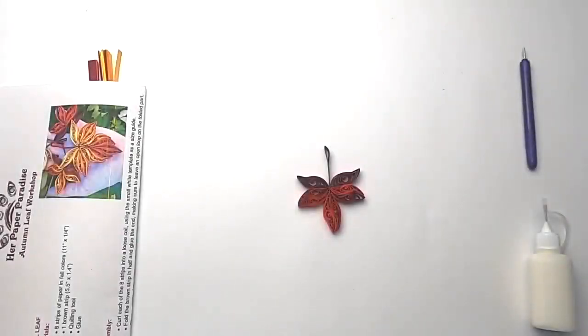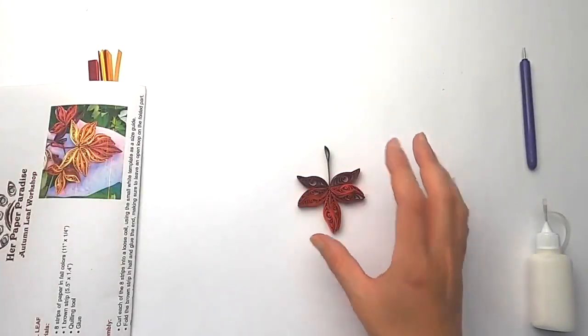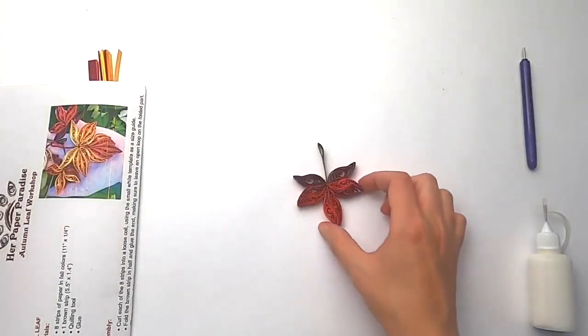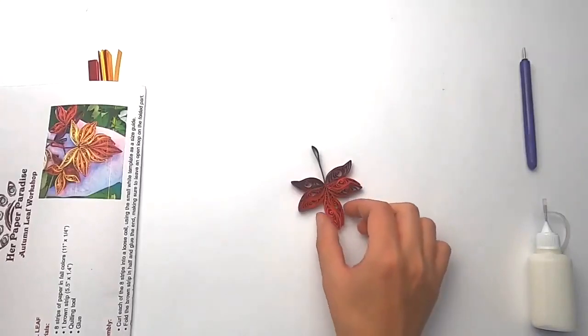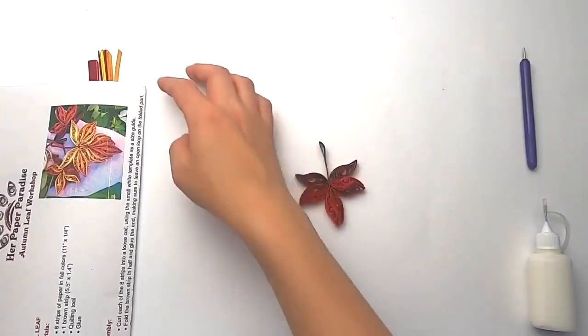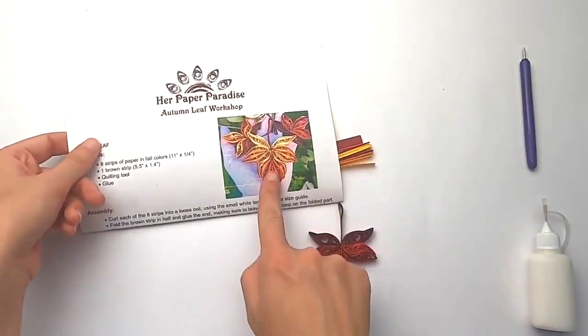Hello everyone, this is Anna from Our Paper Paradise and today I'm going to be showing you how to make two kinds of autumn leaves. We are going to start with the smaller version and then we will create the bigger version.